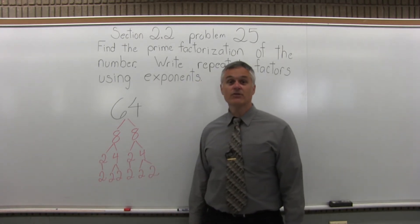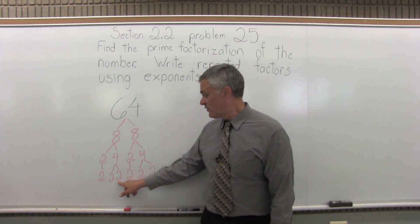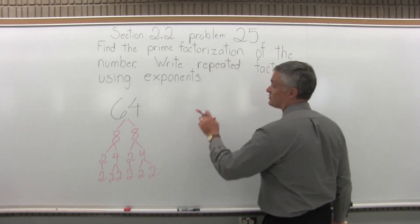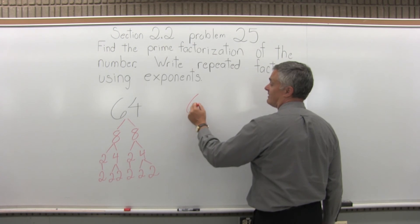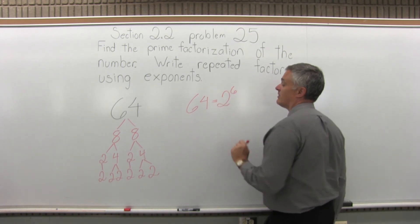So in the end, everything is a 2. So we have 1, 2, 3, 4, 5, 6 2s. And it says write repeated factors in exponents, so I have 64 equals 2 to the 6th power.